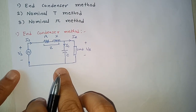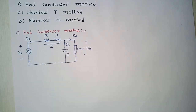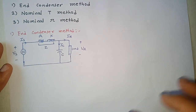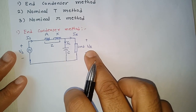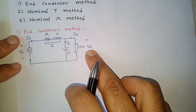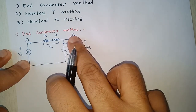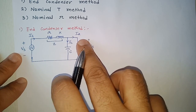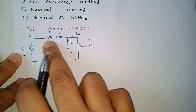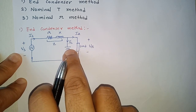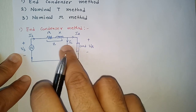We need to obtain expressions for Vs, Is, voltage regulation, efficiency, and other parameters. For the phasor diagram, we take the receiving end voltage Vr as the reference. All quantities are per-phase: Vs and Vr are phase voltages, Is and Ir are phase currents. R and X are per-phase values of one conductor. C is the per-phase capacitance of the line itself.